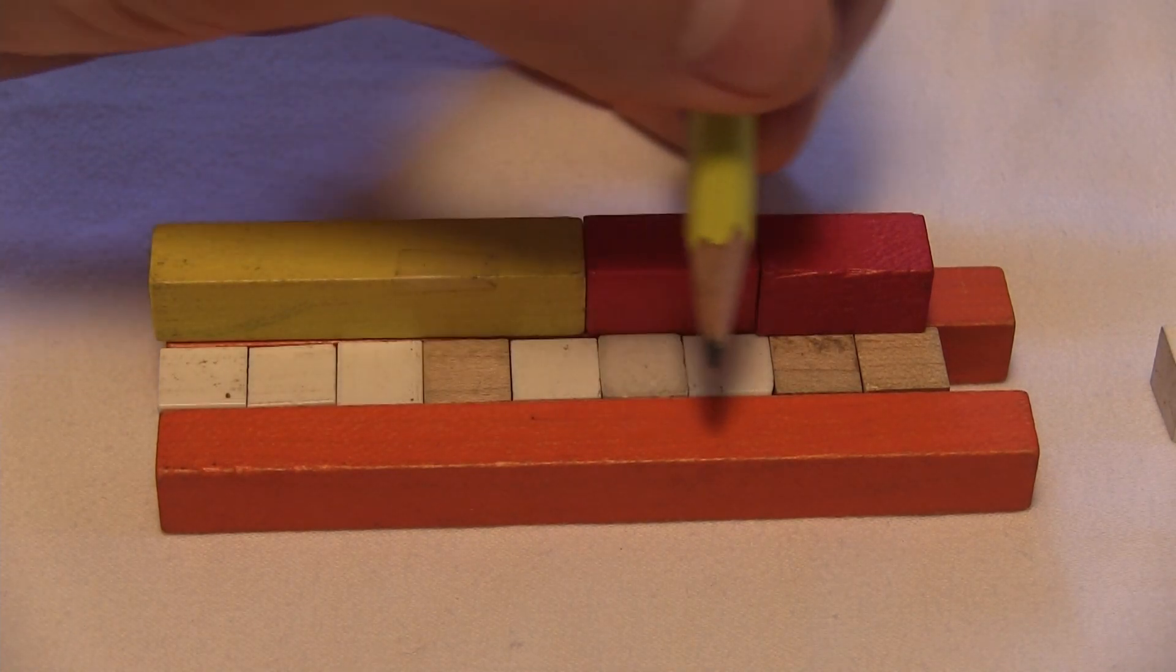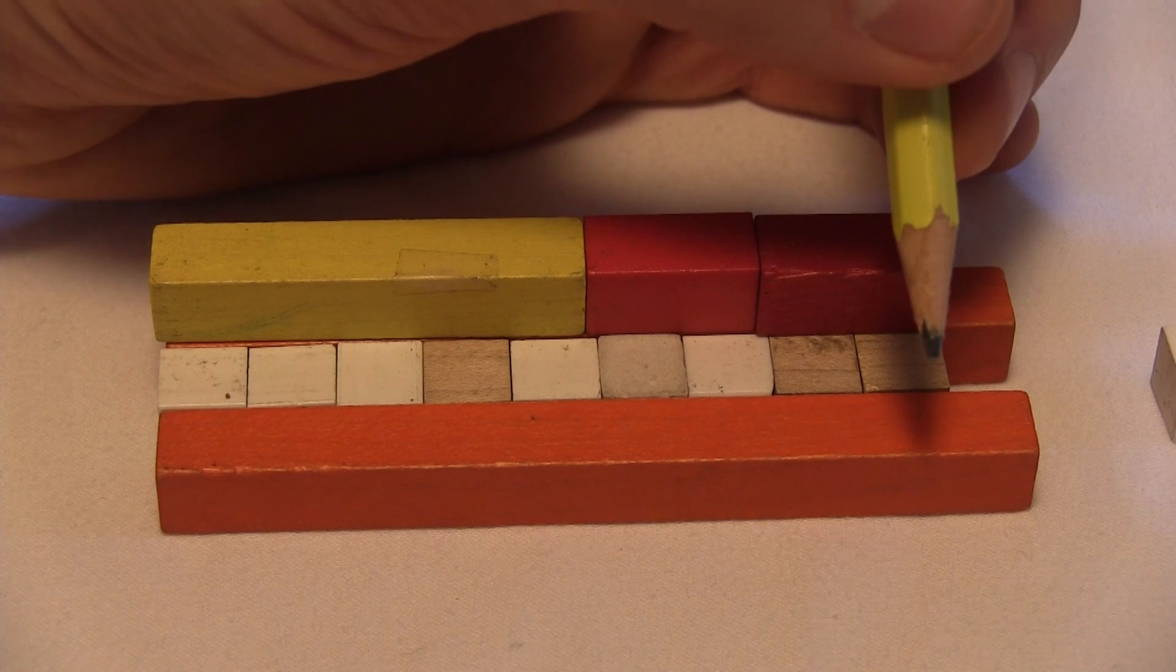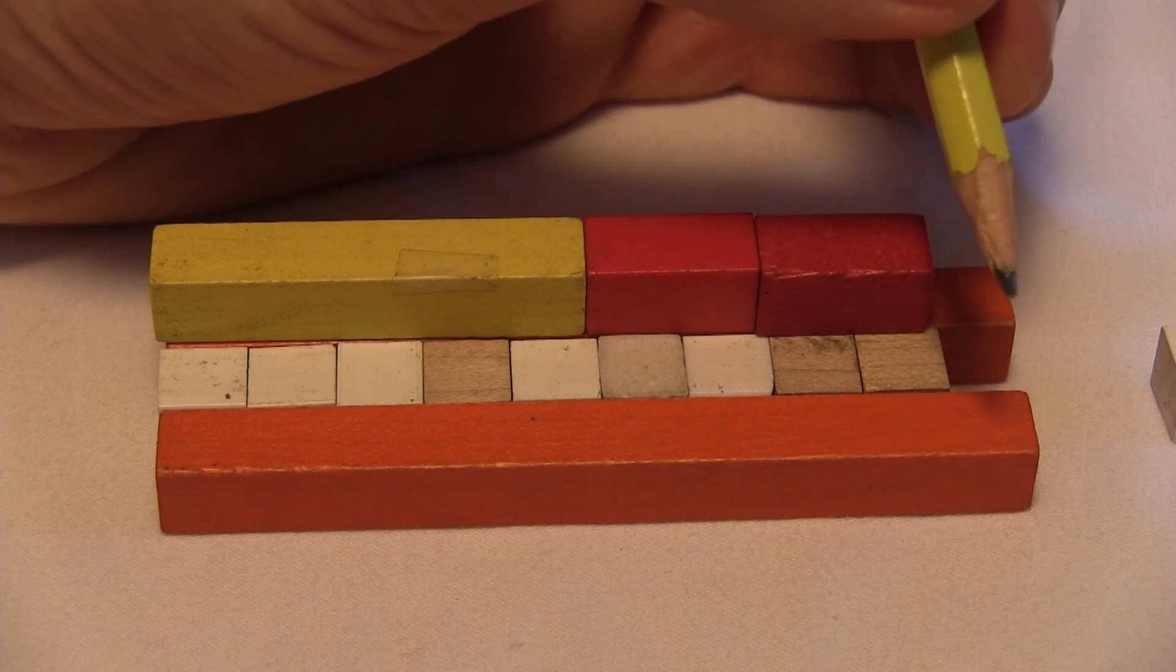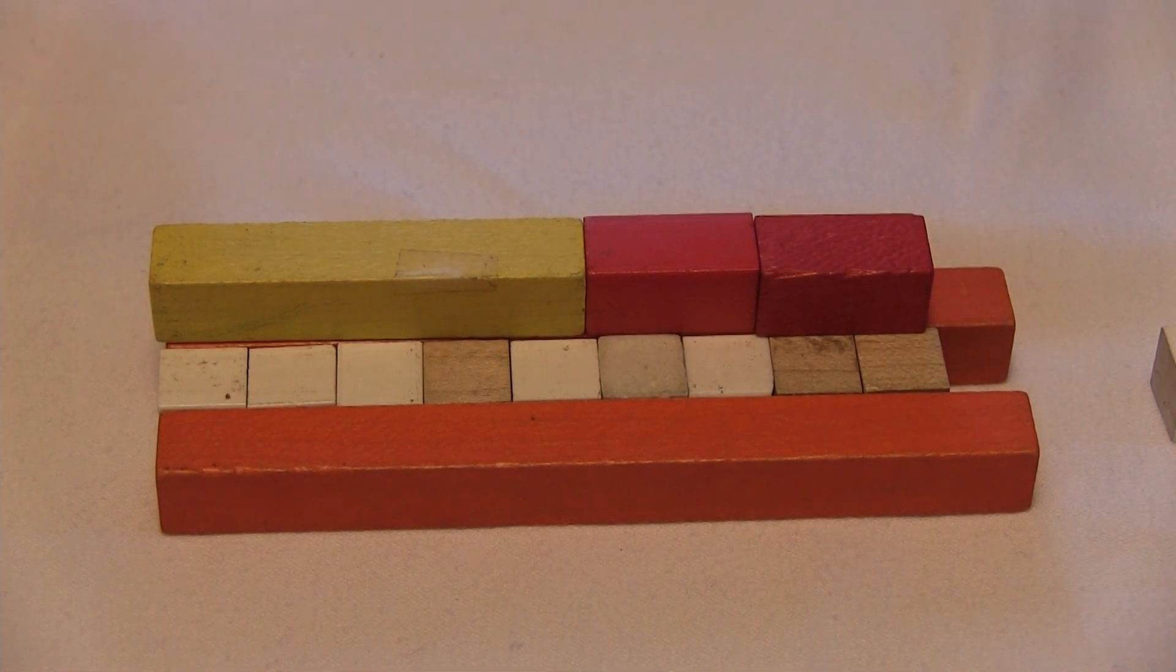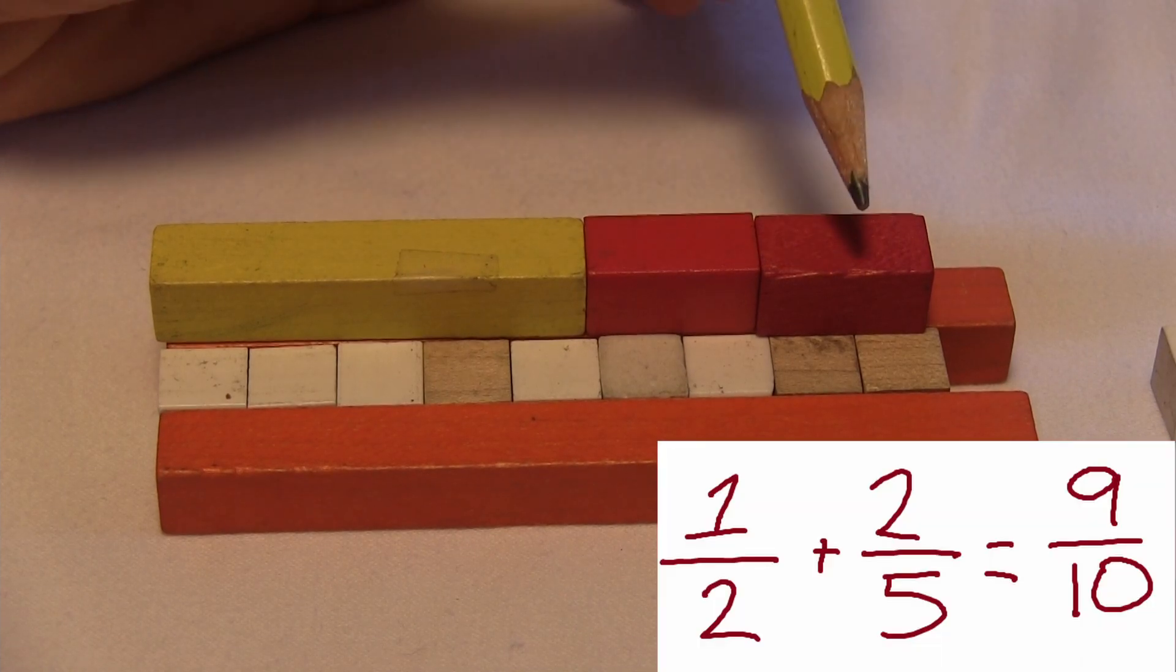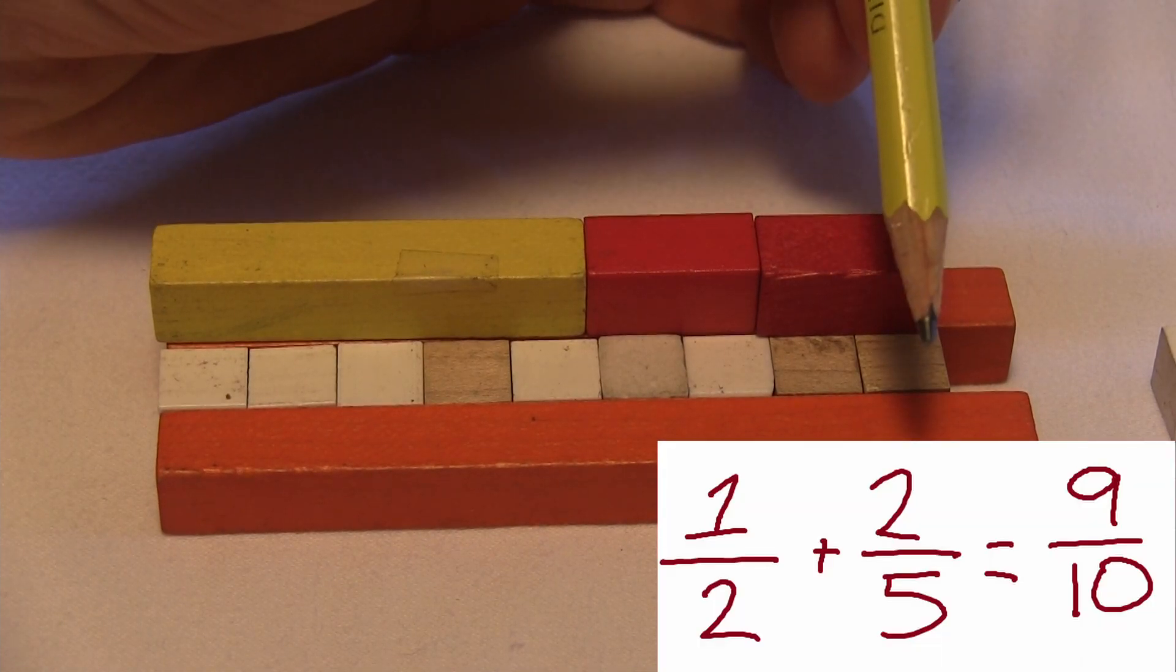One, two, three, four, five, six, seven, eight, nine. It's nine of ten to reach the whole. And so we find out one-half plus two-fifths equals nine-tenths.